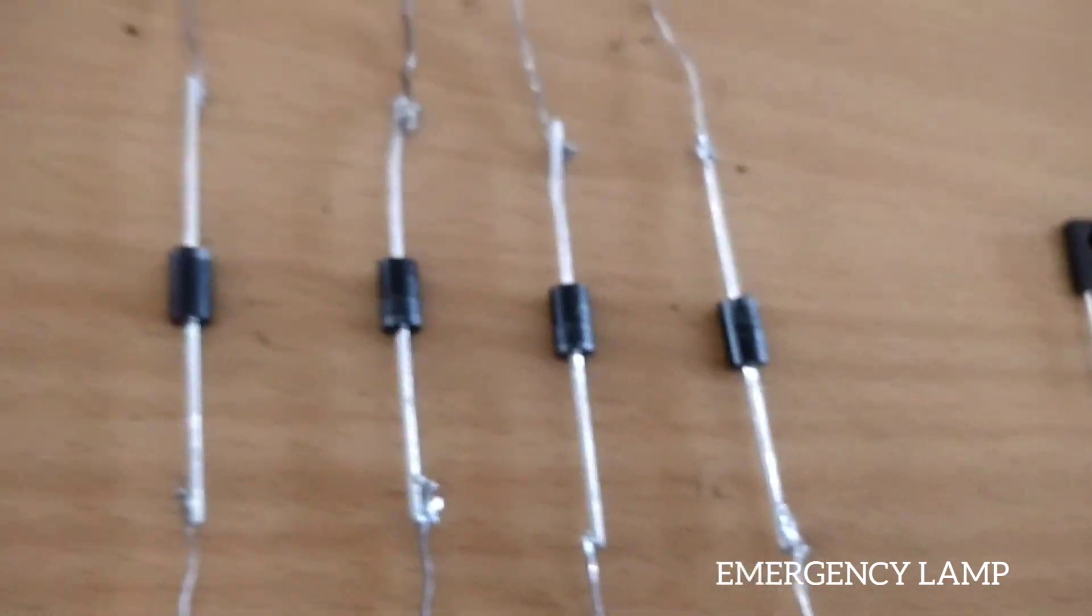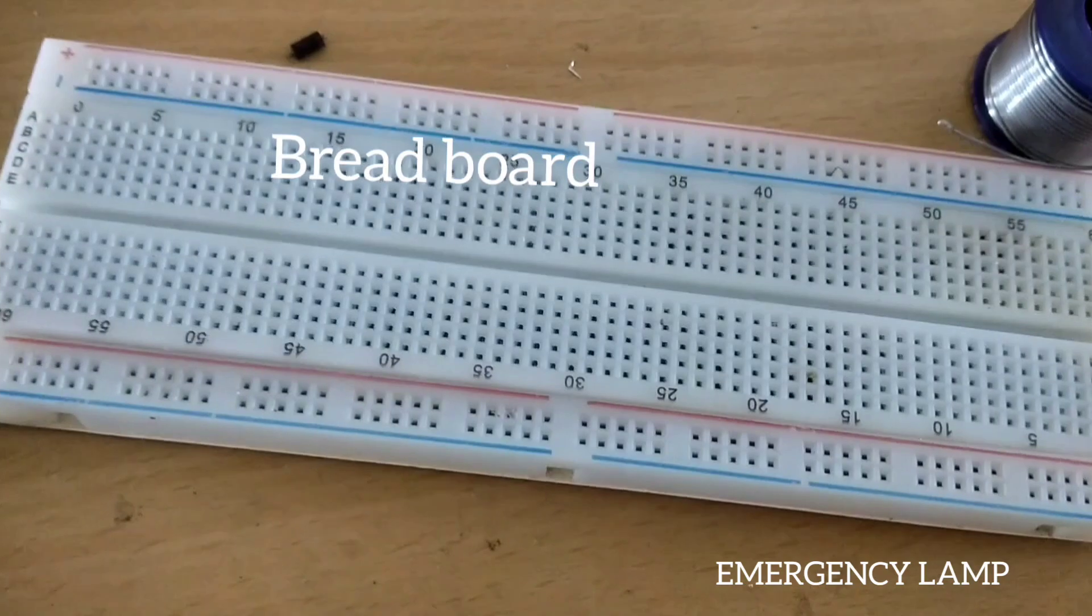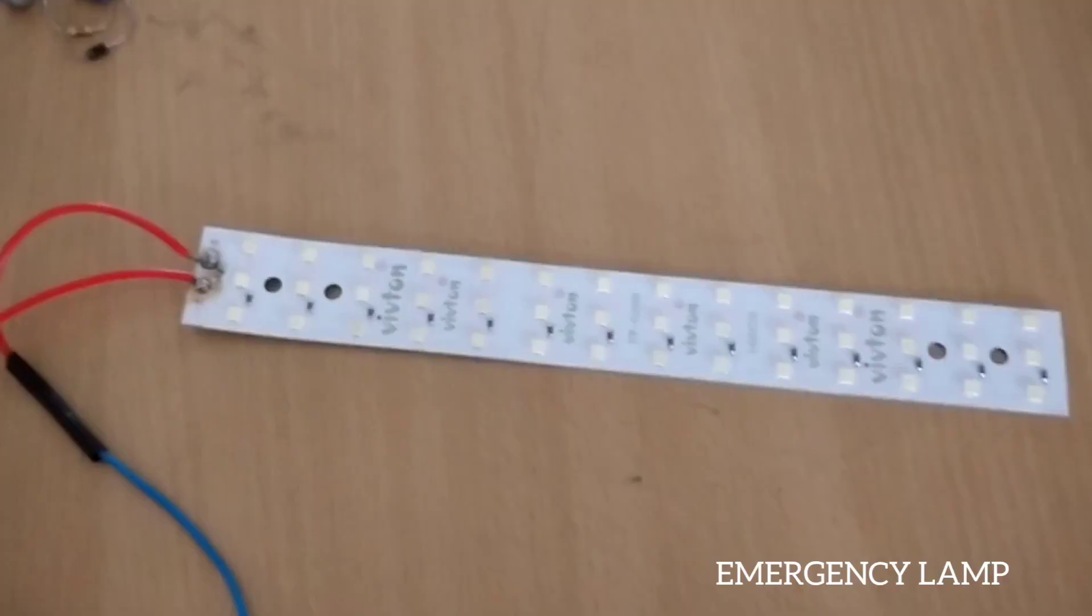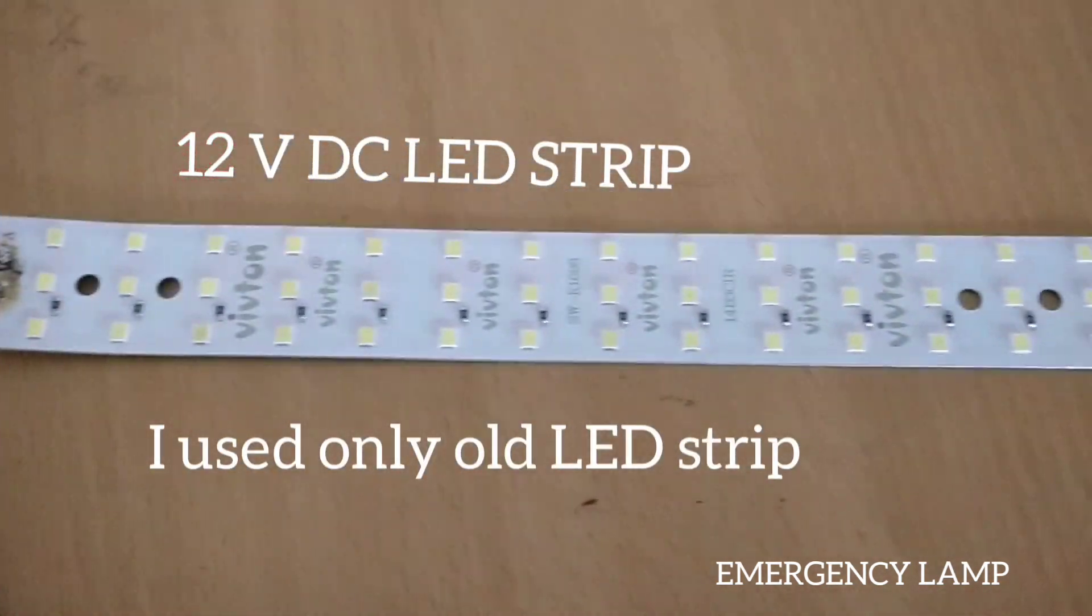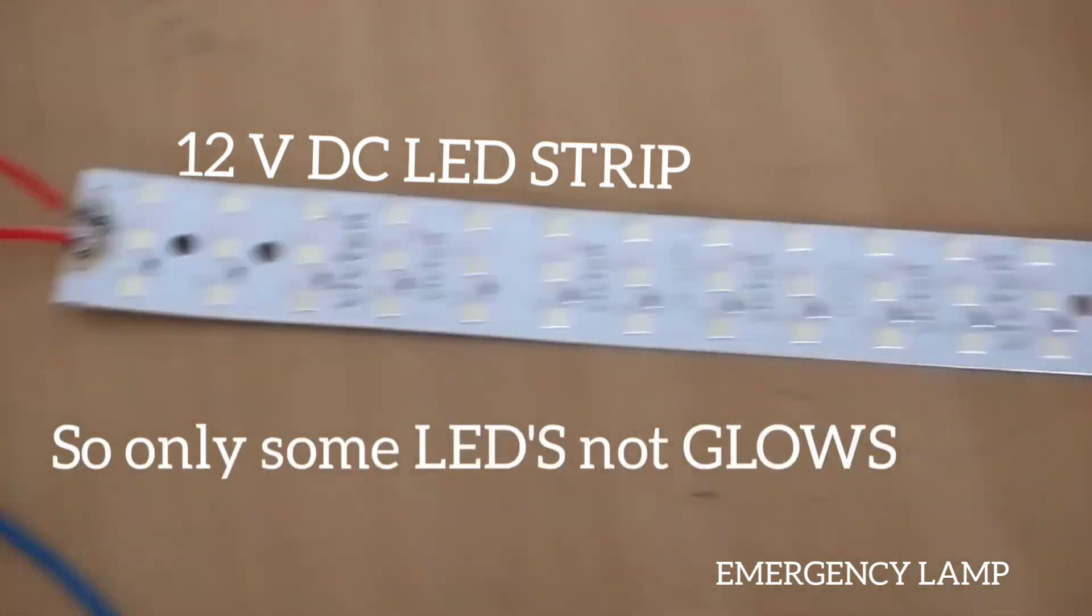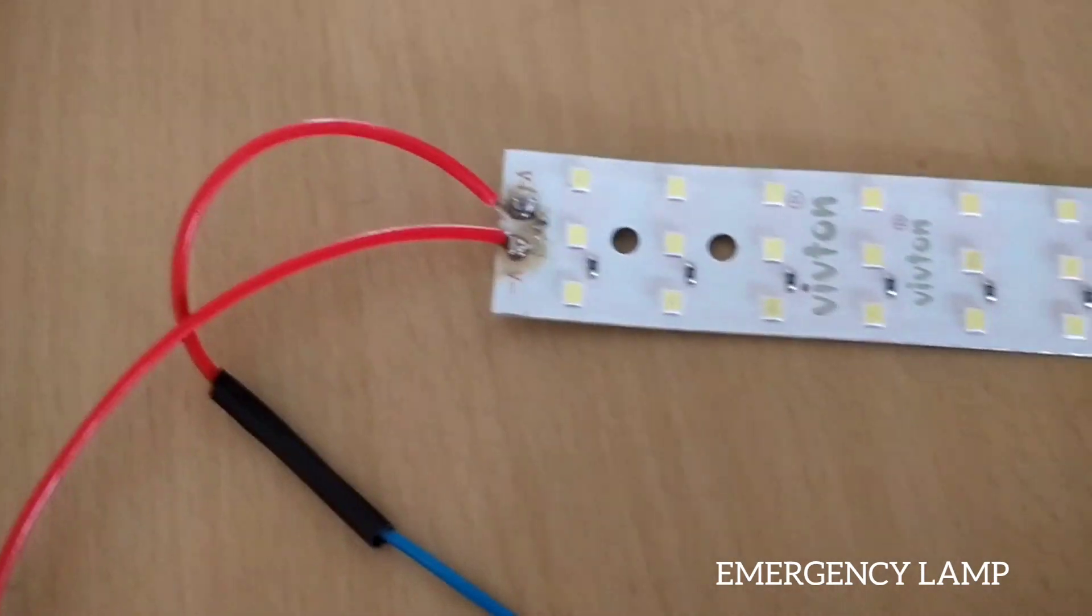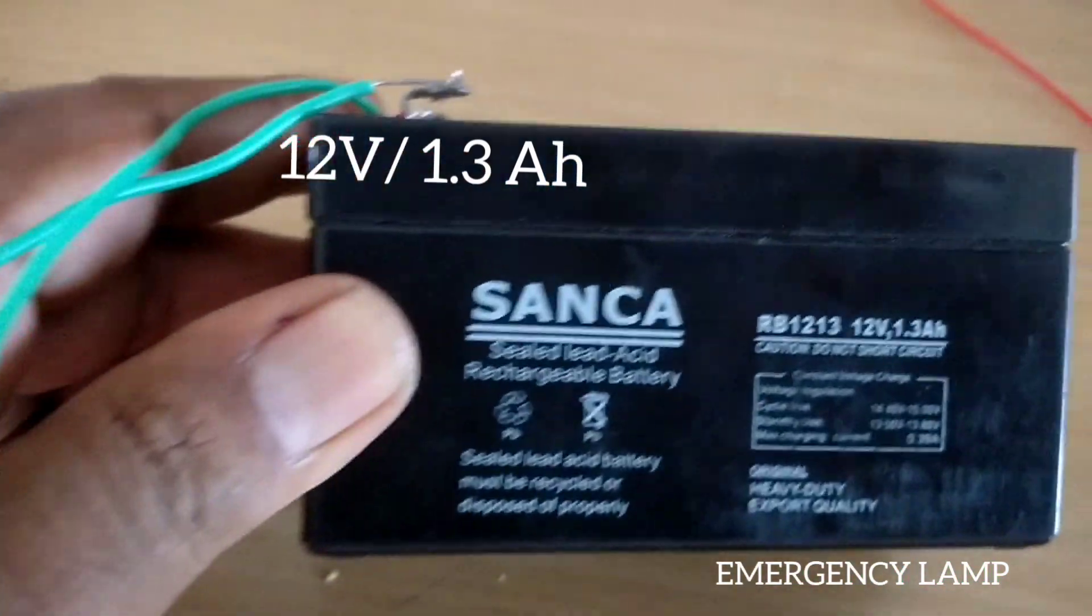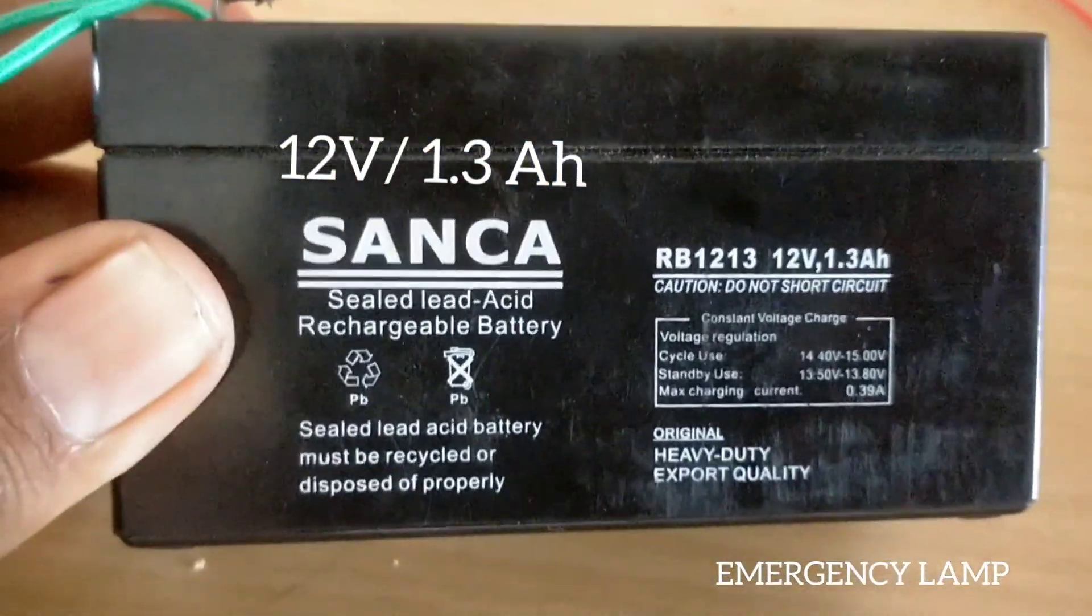We are going to do this first of all in breadboard and 12 volt LED strip and battery. You can see the value of the battery - 12 volt 1.3 Ah battery we are going to use.